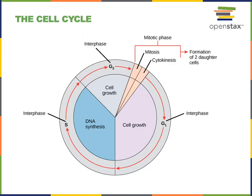Here we have an illustration showing the phases of the cell cycle. The cell cycle is a sequence of events through which the cell is preparing to divide, making two daughter cells from one initial mother cell.